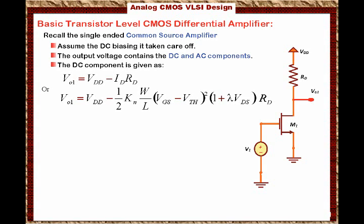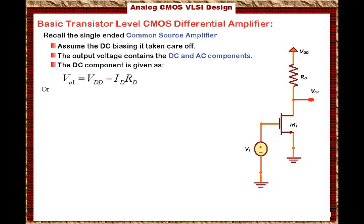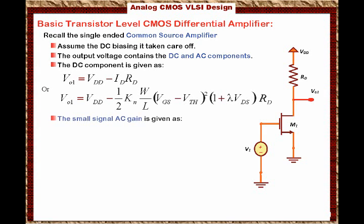We did this analysis in earlier lectures when we discussed the single-stage amplifier. We also know the small-signal AC gain is given as VOUT over V1 equals A, the AC gain, which equals minus GM times RD in parallel with RO.